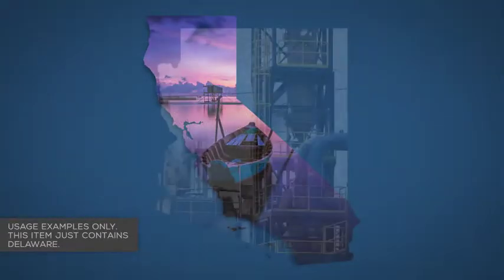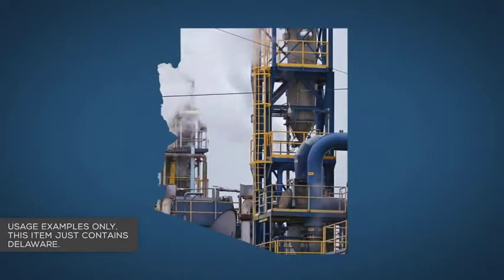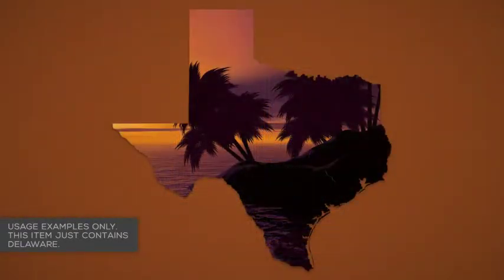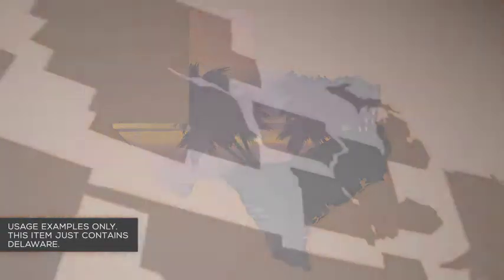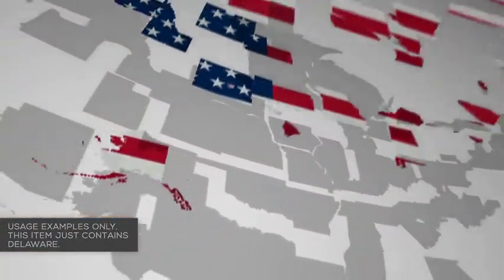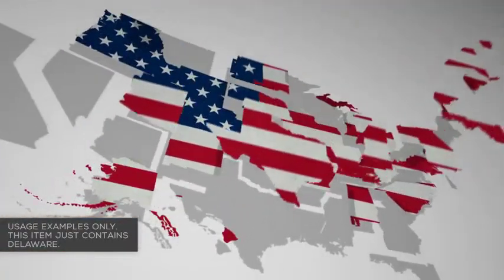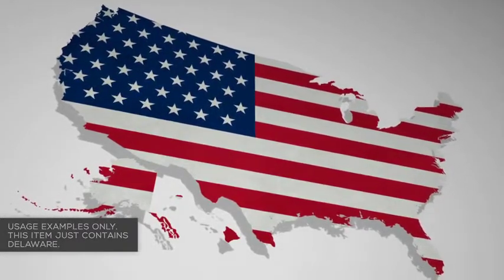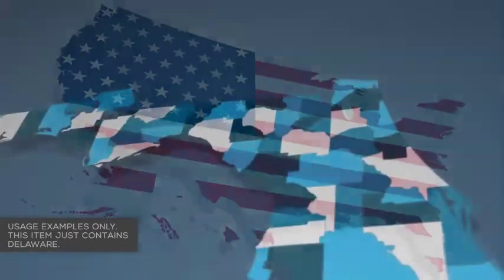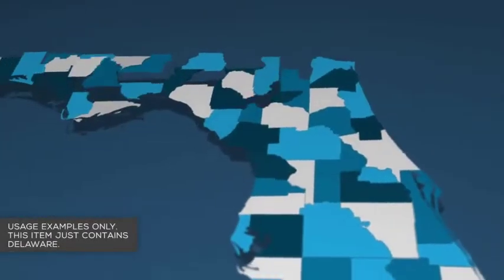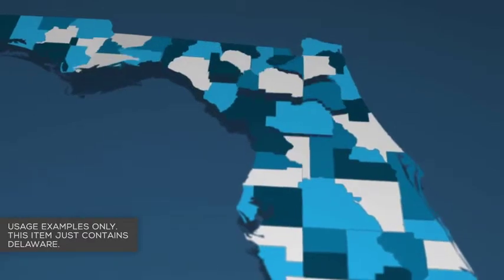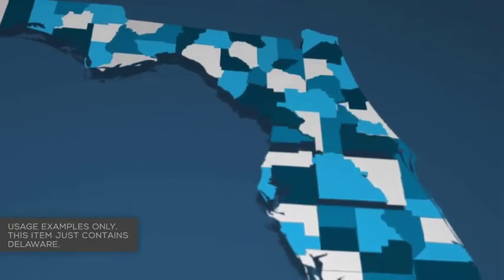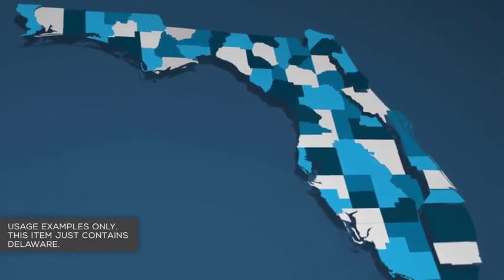Use your own content as a texture for the state — images, footage, whatever you need. Highlight counties with different colors to match your branding and to represent whatever you need the map to represent. Or get creative and add your own animations and images into the texture layers.